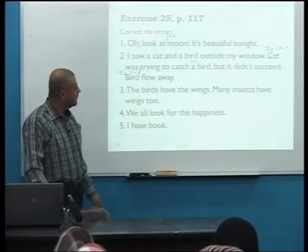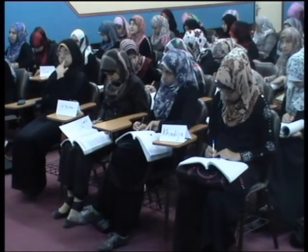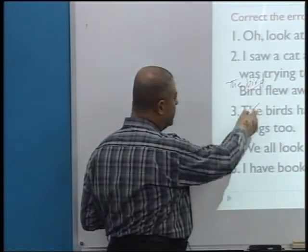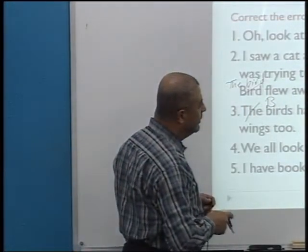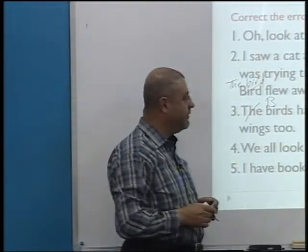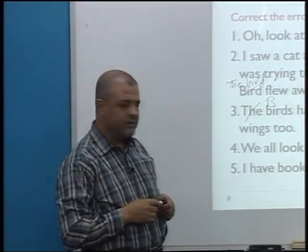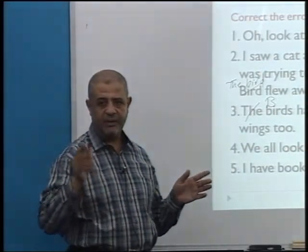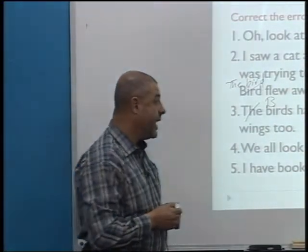Birds have wings — many insects have ones and birds have wings. This is a generic noun, so we use zero article. 'We all look for happiness' — happiness, zero article, very good.